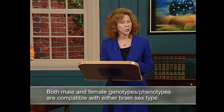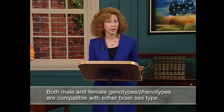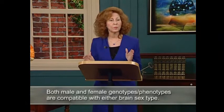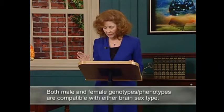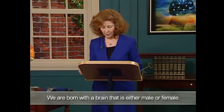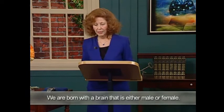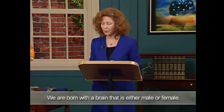It also tells us something very important to understand: both male and female genotypes and phenotypes are compatible with either brain sex type. You could be a genetically male or female person and have a brain of the opposite sex, and it is perfectly compatible. Sexual dimorphism also occurs in human beings, but the critical period is before birth. We are born with a brain that is either male or female, and this cannot be altered by experience — it's due to the hormonal environment that existed or did not exist during fetal development.